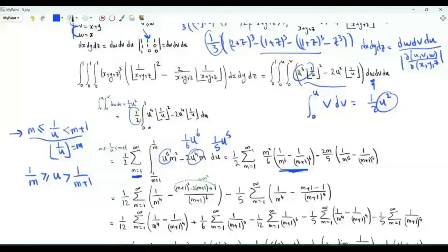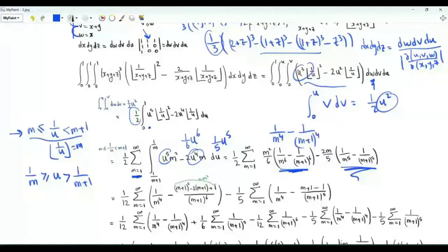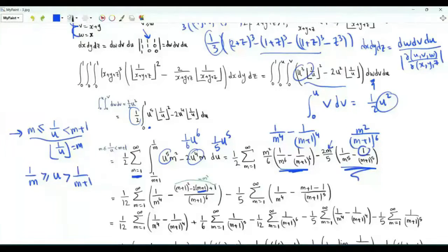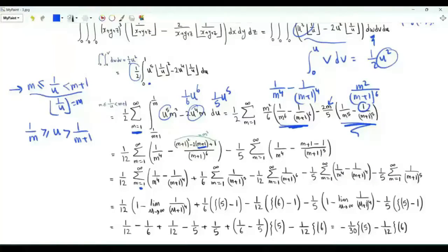Applying the limits gives a sum over m of m²·[1/(6m⁶) − 1/(6(m+1)⁶)] − 2m·[1/(5m⁵) − 1/(5(m+1)⁵)]. To evaluate this, write m² / (m+1)⁶ = [(m+1)² − 2(m+1) + 1] / (m+1)⁶. This telescopes: the Σ[1/m⁴ − 1/(m+1)⁴] collapses to 1. The remaining extra terms involve Σ_{m≥1} 1/(m+1)⁶ = ζ(6)−1 and Σ_{m≥1} 1/(m+1)⁵ = ζ(5)−1.